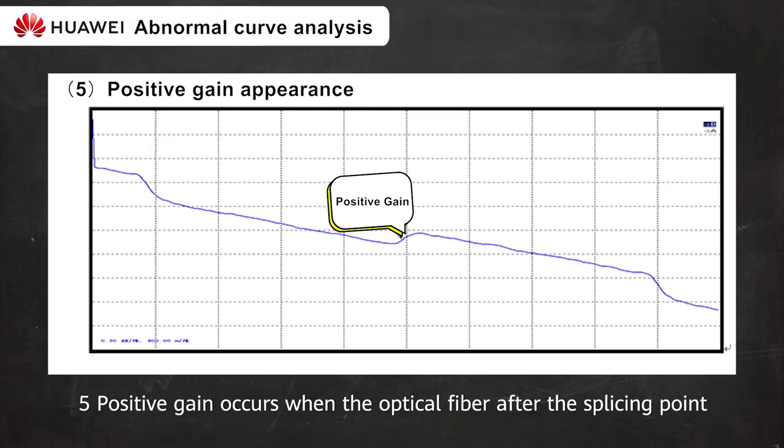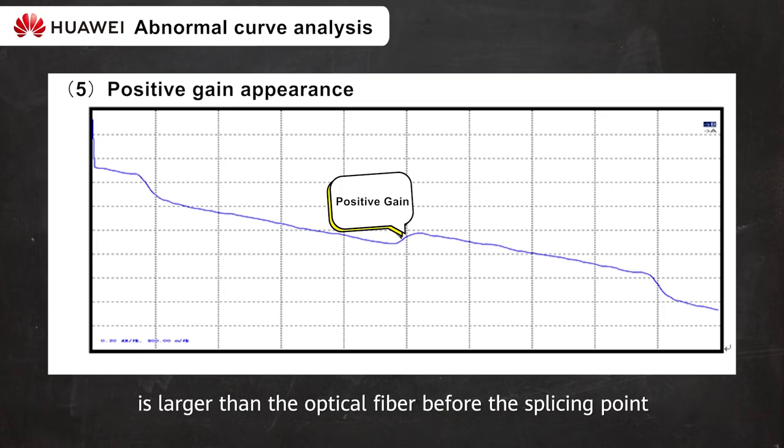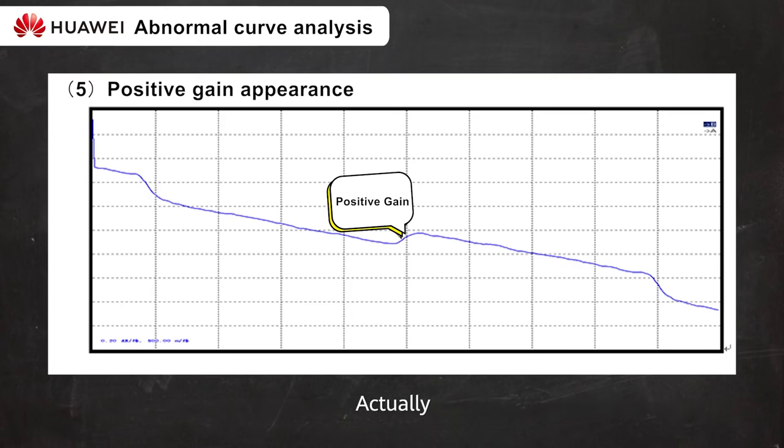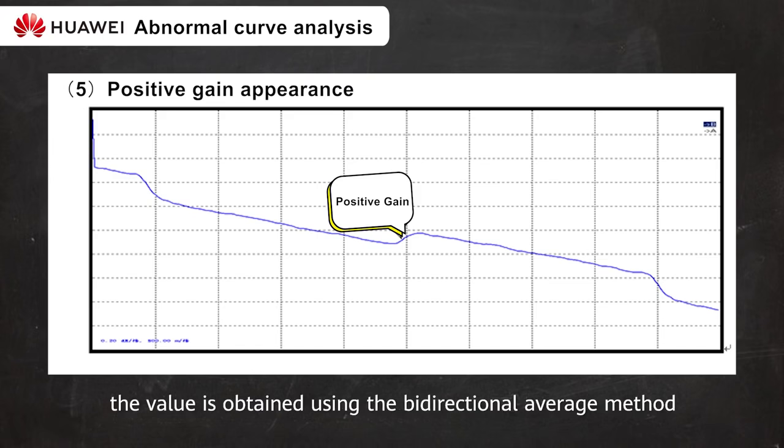5. Positive gain occurs when the optical fiber after the splicing point is larger than the optical fiber before the splicing point, generating more backscattering scattered light. It is often found at the fusion splicing points of the fibers with different mode field diameters or backscattering coefficients. Actually, the splicing point has loss. Generally, the value is obtained using the bi-directional average method.